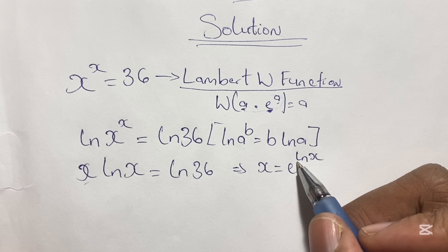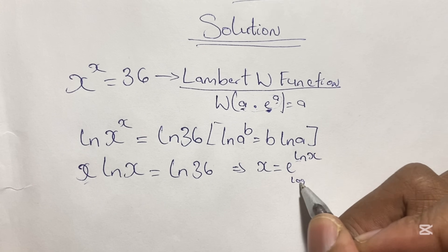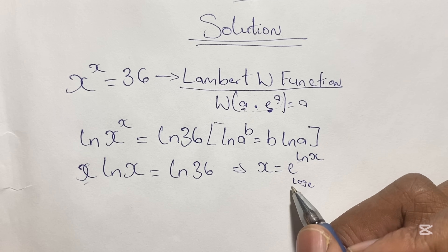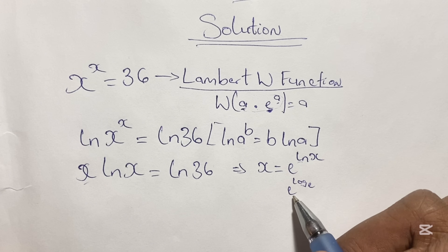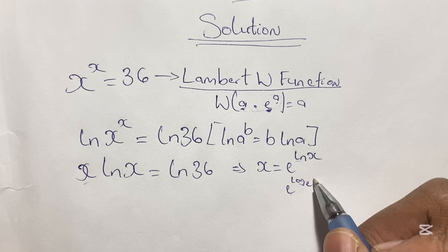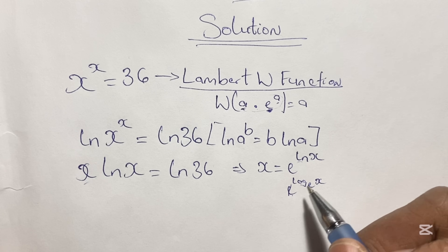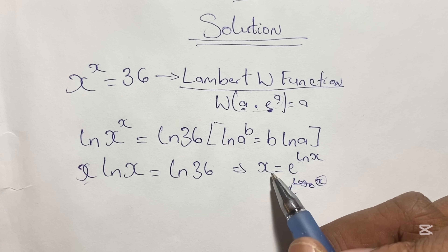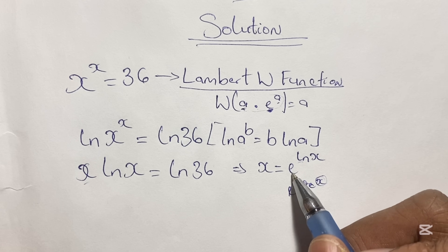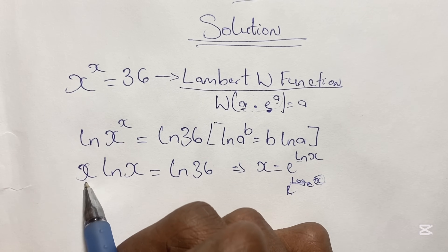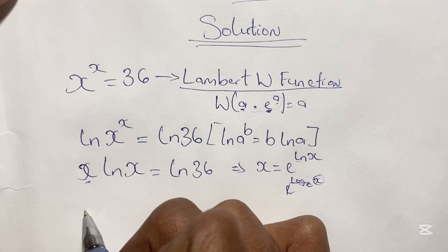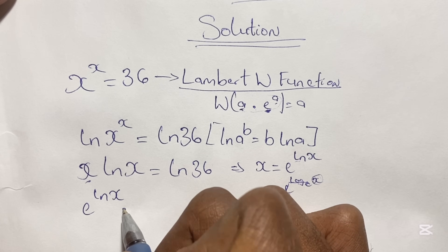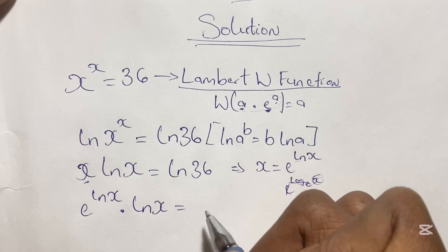LN means natural log where the base of the log is e. So if we have e as the base raised to the power of log base e, the base e and the log e cancel out, and the result is just x. Having this understanding, we can express x as e to the power of ln x, and substitute it into our equation: x is equal to e to the power of ln x, multiplying the other ln x, and this equals ln 36.